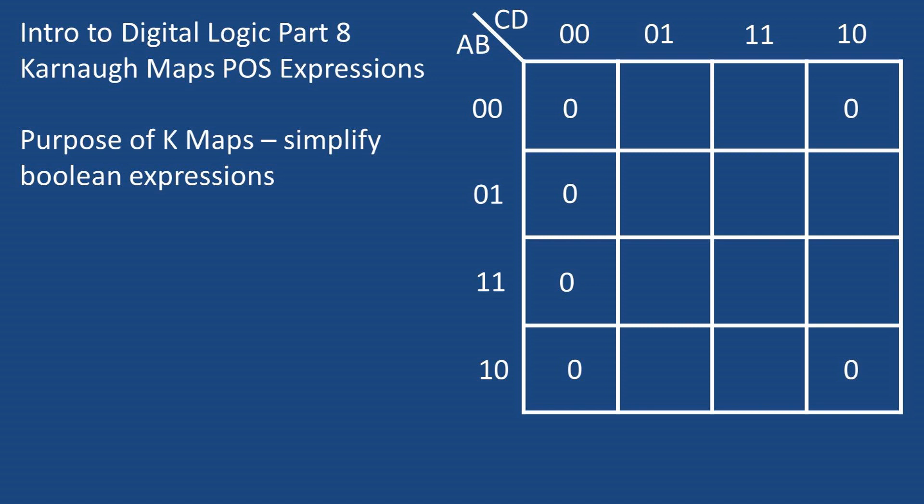The combinations are represented as ones and zeros. When laying out the Karnaugh map you must only have one variable change between adjacent rows and adjacent columns. So you cannot place a 1-1 row next to a 0-0 row.